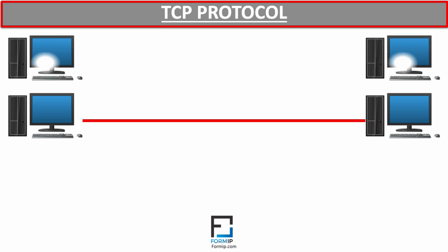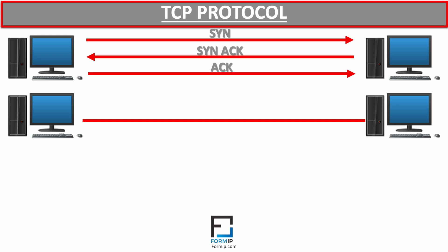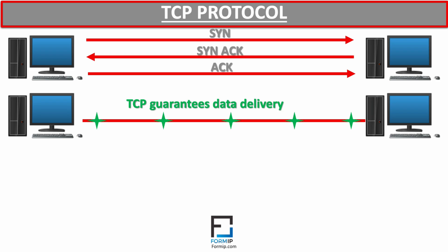For example, we have these two PCs which want to exchange data using the TCP protocol. In the first step, the computer will send a message of type SYN. Then the PC on the other end, the one that receives the SYN packet, will send a message of the SYN-ACK type to say that it has received it. And finally, the other PC will also acknowledge receipt with an ACK message. It is only after validating these three steps that the data can be delivered. The most important thing to remember about TCP is that it guarantees the delivery of data — if a packet of data is lost, TCP will send it back.